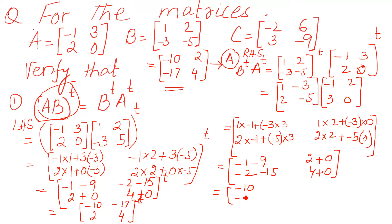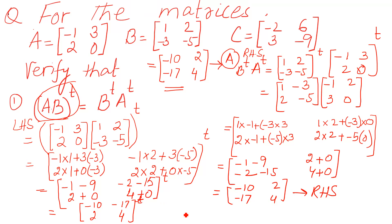Negative 10, negative 17 — here is negative 10, negative 17. Here is 2 and 4. So this is the right hand side. Both are equal: minus 10, 2, minus 17, 4 on the left hand side, and negative 10, 2, negative 17, 4 on the right hand side. It means we have proved that A B whole transpose equals B transpose A transpose.